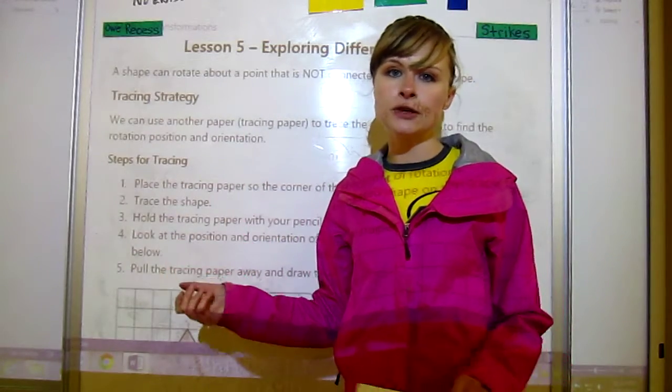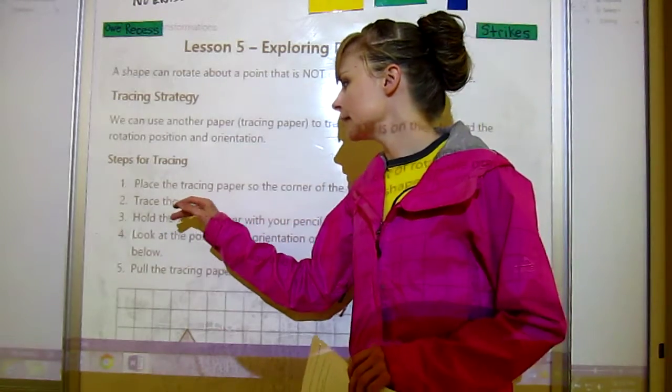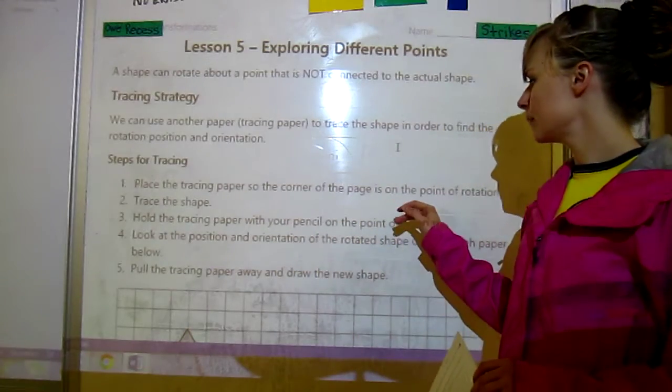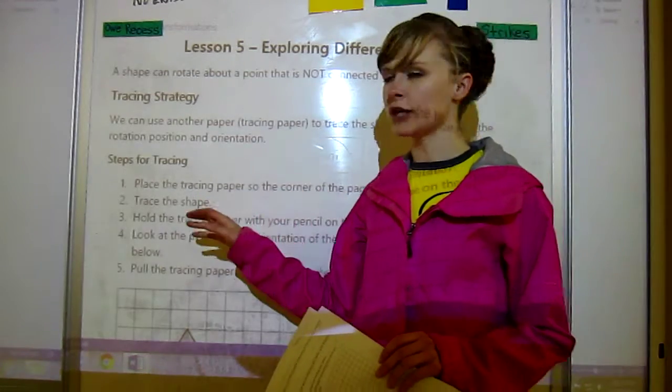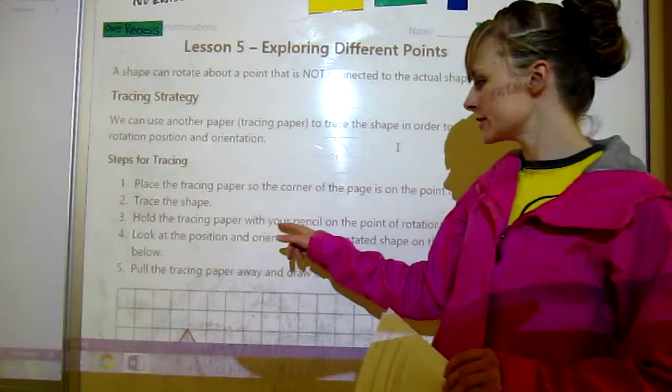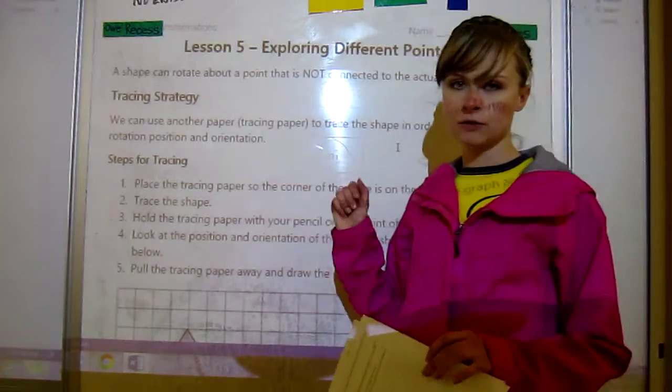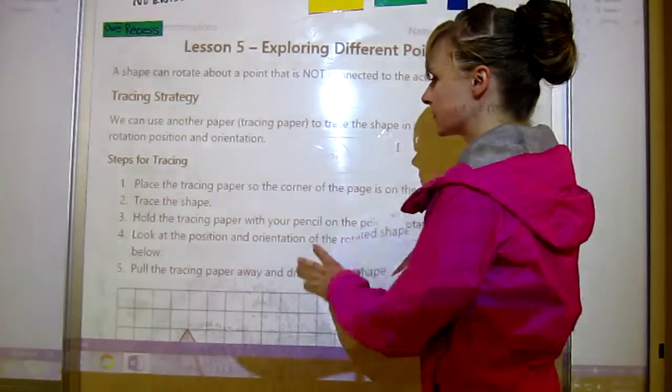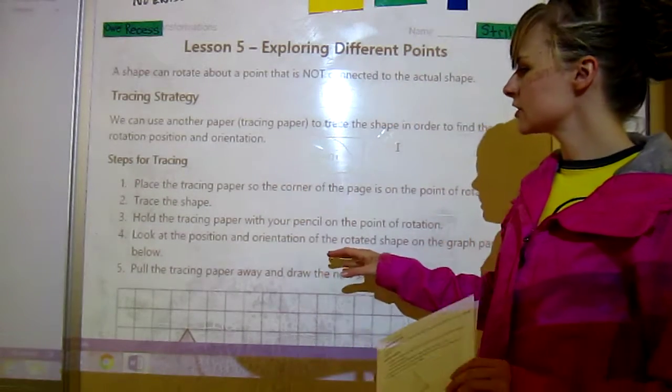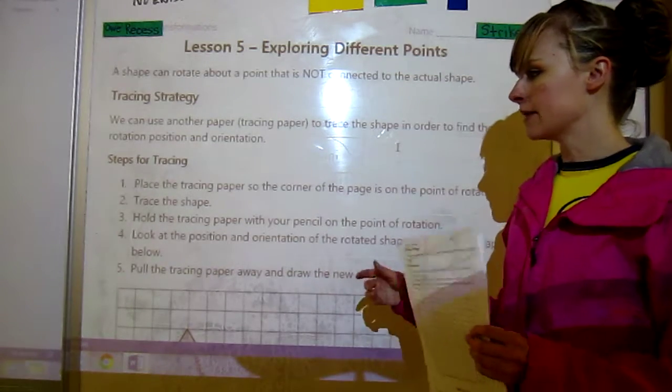I know those are big words, but it's pretty straightforward. The steps are: place the tracing paper so the corner of the page is on the point of rotation, then trace the shape. Hold the tracing paper with your pencil on the point of rotation and draw the shape, then you're going to turn it. After you turn it, look at the position and orientation of the rotated shape on the graph paper below, then pull the tracing paper away and draw the new shape.